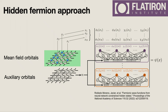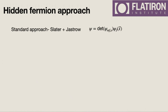Let me start with the hidden fermion approach. This is an extension of the Slater-Jastrow method. The idea is you have mean-field orbitals for your electrons — one orbital for every site with spin up and spin down — and you take a determinant over those orbitals. But in this configuration, we also have auxiliary orbitals that are output by a neural network. Your wave function is the determinant of a matrix whose top half contains the mean-field orbitals and whose bottom half is output by a neural network — this is an extension of the Slater-Jastrow approach.